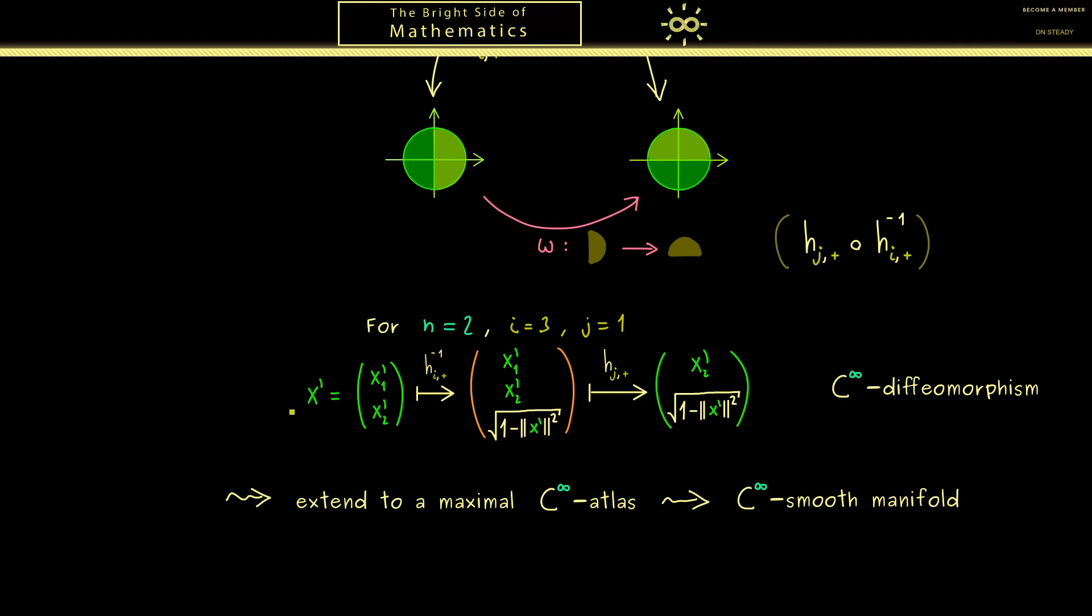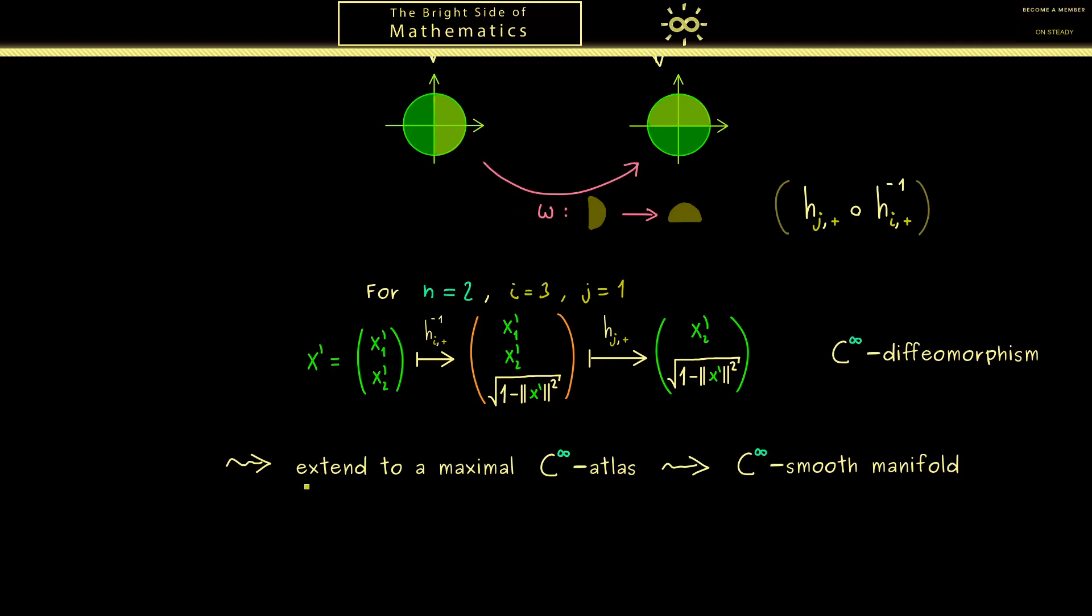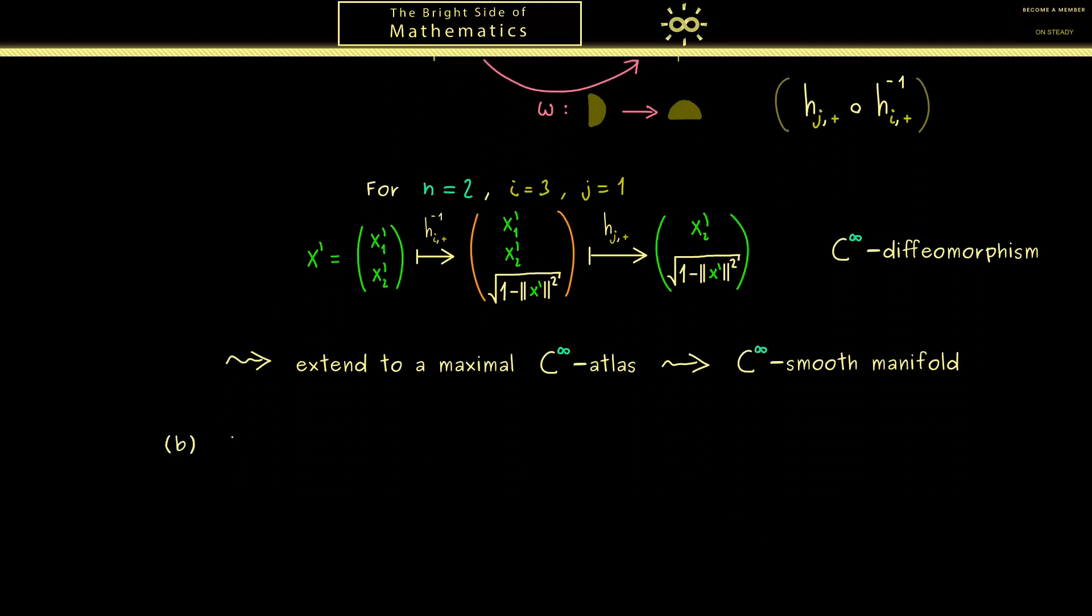For this reason, I would say let's also look at simpler examples. In this next example, we can simply say that R^n is a smooth manifold. And of course here it's not hard at all to find immediately an atlas for this manifold. In fact, we only need one chart consisting of the whole manifold R^n, and the map h can be the identity map.